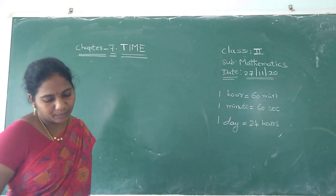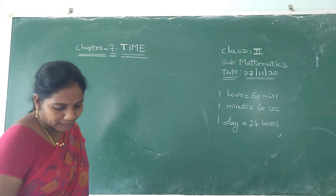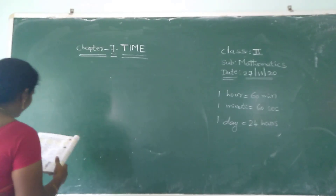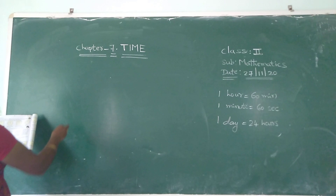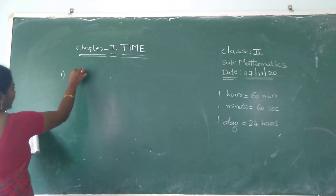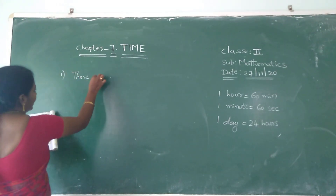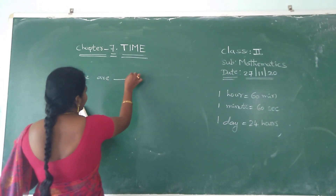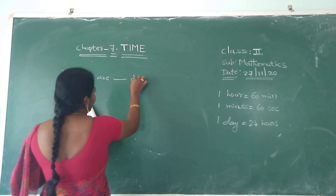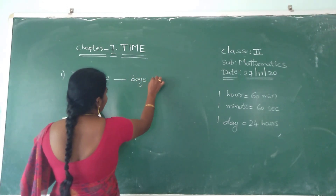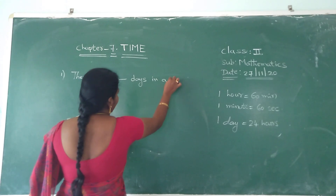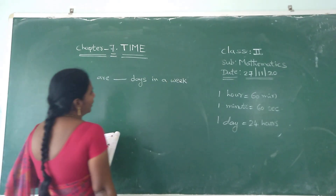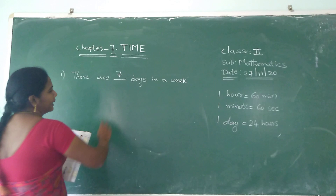Today I think we have some questions. There are dash days in a week. In your week how many days are there? How many days? Seven days.